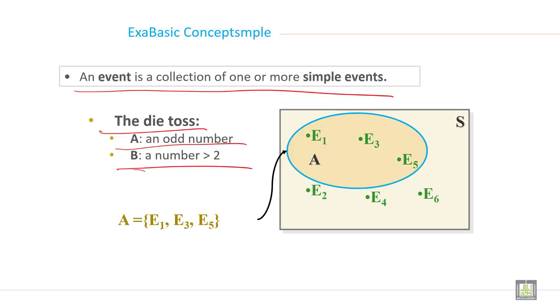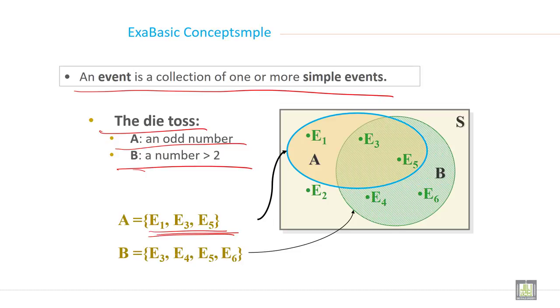So A is E1, E3, E5 because these are the odd numbers. And B equals E3, E4, E5, and E6 because these are the numbers greater than 2 in the sample space. So this is the example of event A and event B.